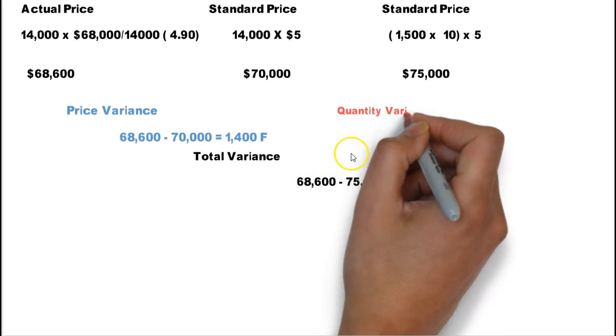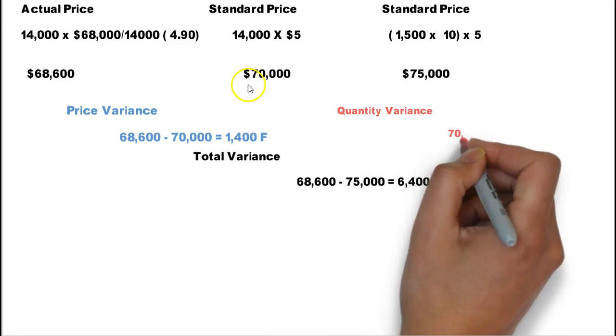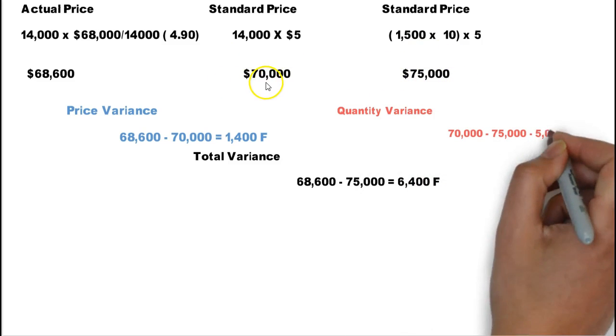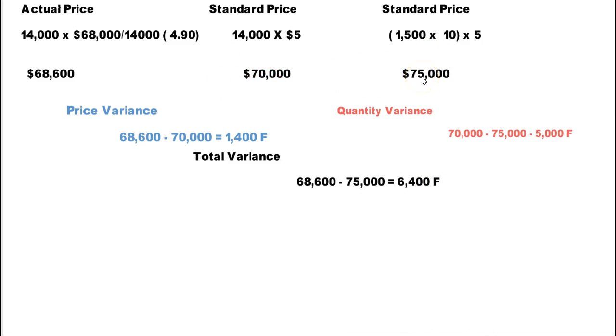The other is the quantity variance, and that will be the difference between this number here and this standard. And again, left is less than right, therefore it will be favorable. And that concludes how we do the analysis for direct material variance.